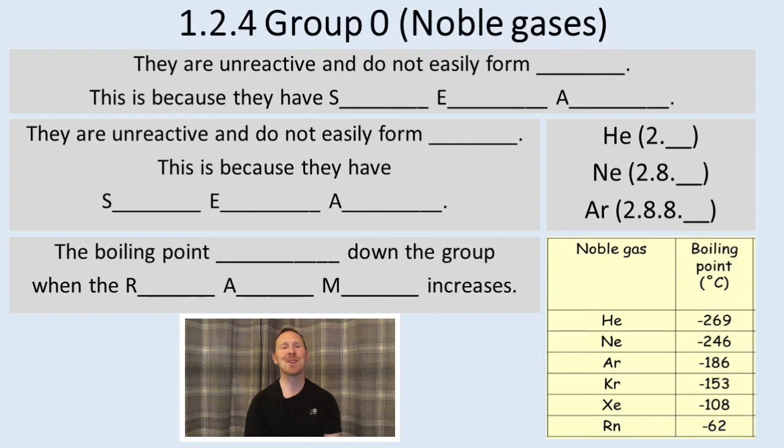When we consider in Unit 7, the boiling point of hydrocarbons, you'll know that as the chain length increases, the boiling point increases because the relative atomic mass increases, and there are stronger, or more, intermolecular forces holding the molecules together. So therefore more energy is required to separate the molecules.